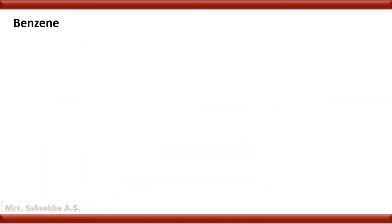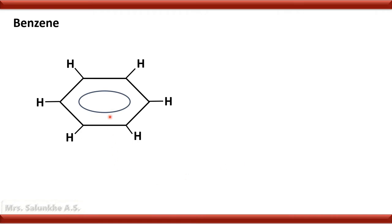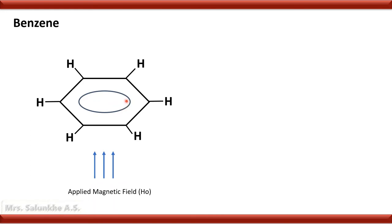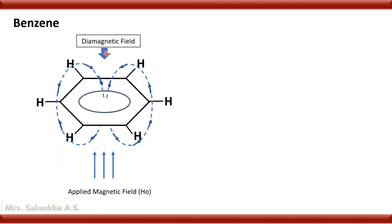Now we see the anisotropic effect in case of benzene. In benzene, carbon atoms are in sp2 hybridization state, and there is a planar structure for the benzene ring. The orientation of the benzene ring to the applied magnetic field is also perpendicular. The pi electrons are delocalized, and due to their delocalization, a ring current is observed. Due to the ring current, a secondary magnetic field is generated above and below the plane of the ring — that is, there is a diamagnetic field above and below the plane. At the periphery of the ring, there is a paramagnetic field, and the protons are present in that paramagnetic field — that is, in the deshielded zone.